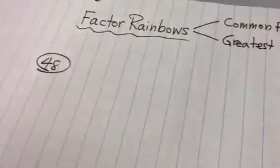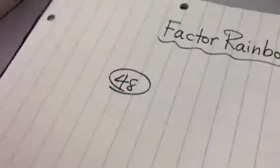So those are called factors. Here we have 48, and we're going to look at all of the factors that, when multiplied together, produce 48. And we're going to set it up in the form of a rainbow.